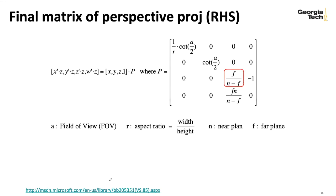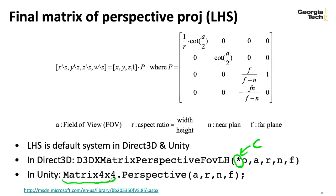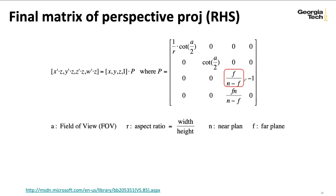There is, of course, a right-handed version of this in some APIs. Again, this is a little bit strange because the underlying math here would work for a right-handed system. You would just put in negative numbers for f and n instead of positive numbers for f and n.